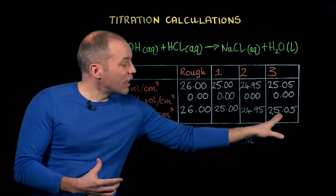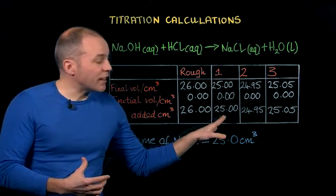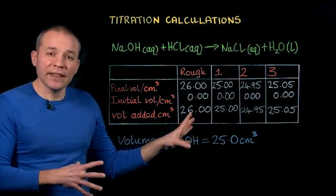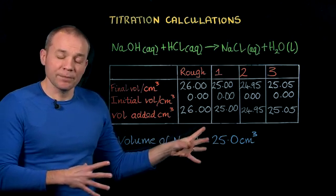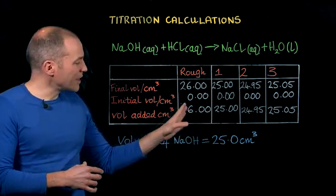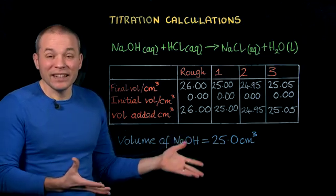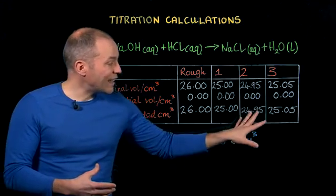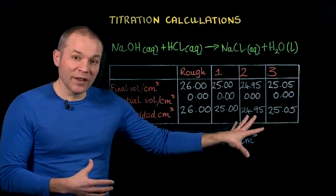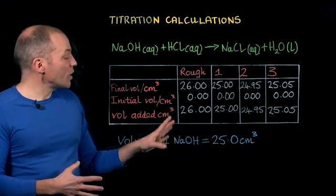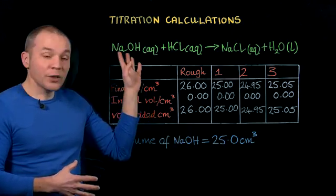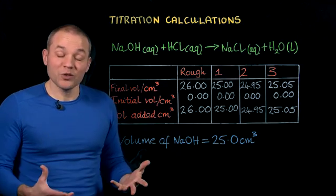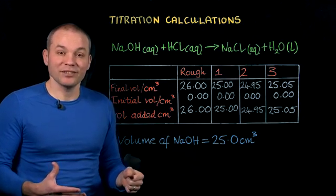We need to take an average value of these three values, and we would not include the rough value in that average calculation because that's effectively an anomalous result. So once we've worked out the average volume of acid needed, along with the volume and concentration of the sodium hydroxide, we can work out the concentration of the hydrochloric acid solution.